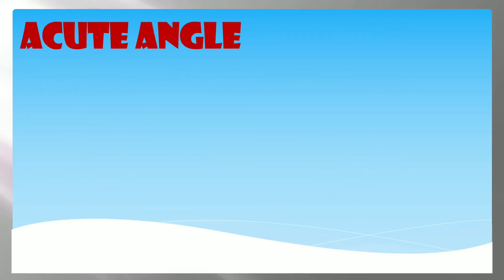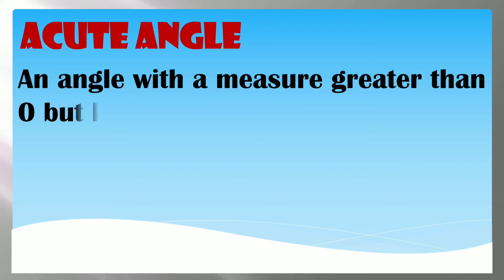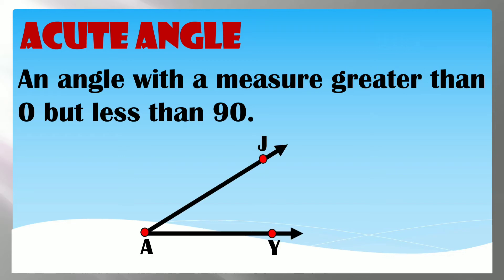Now let us look at the kinds of angles. An Acute Angle is an angle with a measure greater than 0 but less than 90. When the opening is small, it is an acute angle. Angle JY is an example of an acute angle.